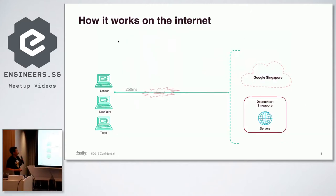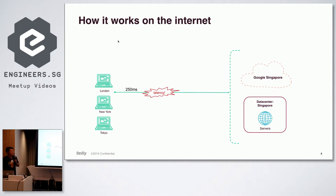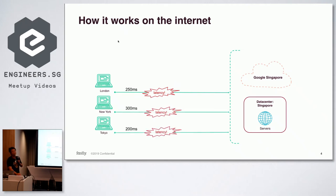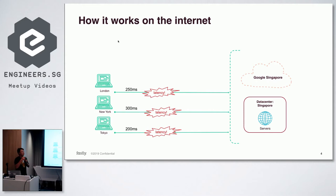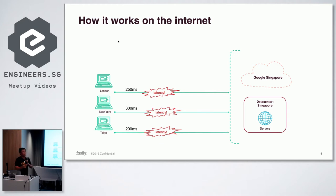On the internet: Singapore to London is about 250 milliseconds — based on physical distance and physics, the speed of light. Singapore to New York is 300ms, Tokyo about 200ms. These are based on two big factors: physical distance and carrier peering relationships. In China, for example, the north is China Telecom and the south is China Unicom — latency within the country can be as high as 250ms, not because of distance but because they don't work together.